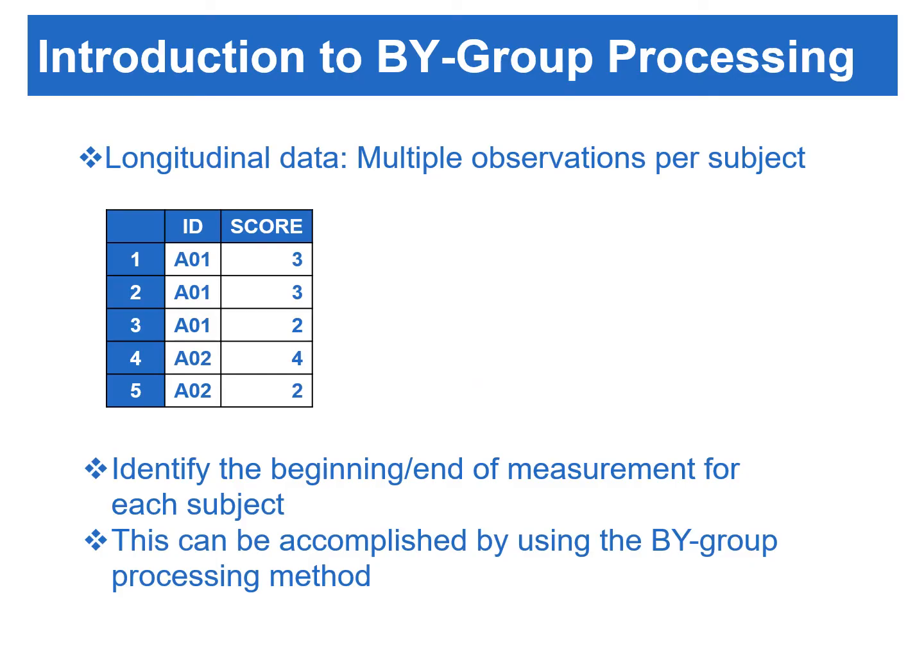The data sets used in previous chapters only contain one observation or one measurement per subject. Sometimes we will also work with data that has multiple observations for each subject. This type of data often results from repeated measures for each subject and is often called longitudinal data. Applications that involve longitudinal data often require identifying the beginning or end of measurement for each subject. This can be accomplished by using the by-group processing method.